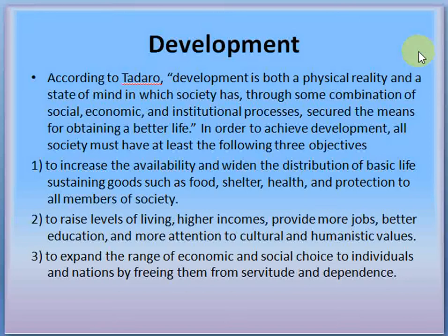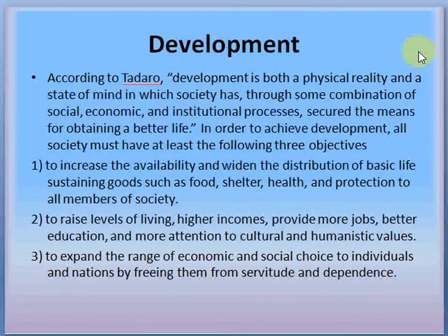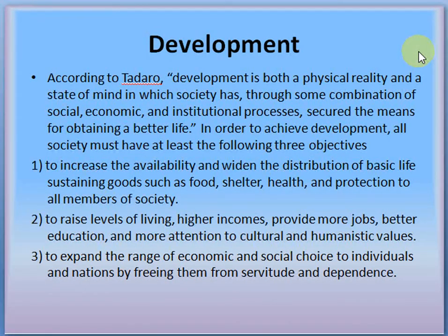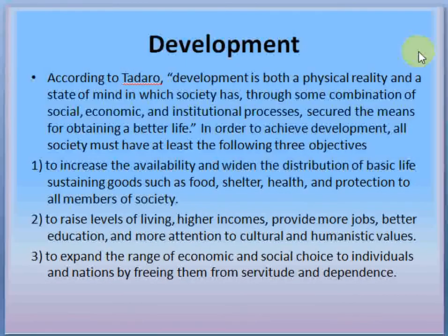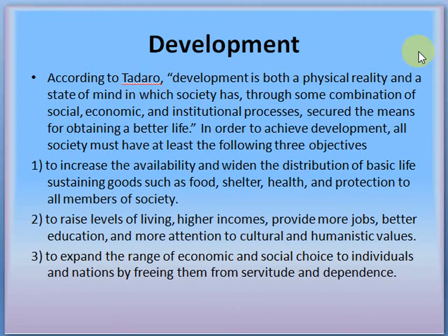In order to achieve development, every society must have at least the following three objectives. First, to increase the ability and widen the distribution of basic life-sustaining goods such as food, shelter, health and protection. Second, to raise the level of living — higher income, more jobs, better education, and more attention to cultural and humanistic values. Third, to expand the range of economic and social choice for individuals and nations by freeing them from servitude and dependence.